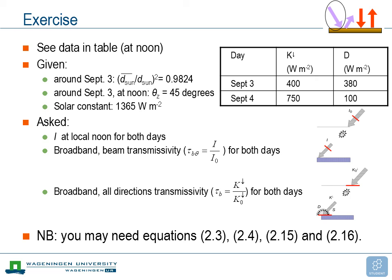We're going to do an exercise. We have observations shown in a table: the first column shows global radiation and the second column gives diffuse radiation for two days in September. Additionally, the eccentricity factor for September 3 and 4 is 0.9824, the solar zenith angle at noon is 45 degrees, and you can assume the solar constant is 1365 watts per square meter.